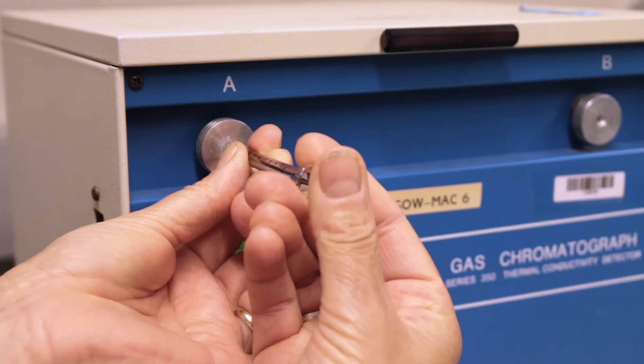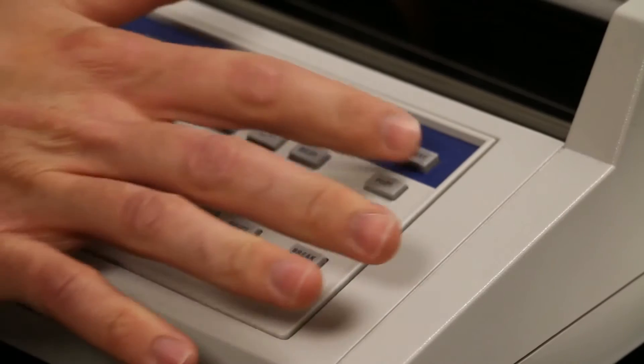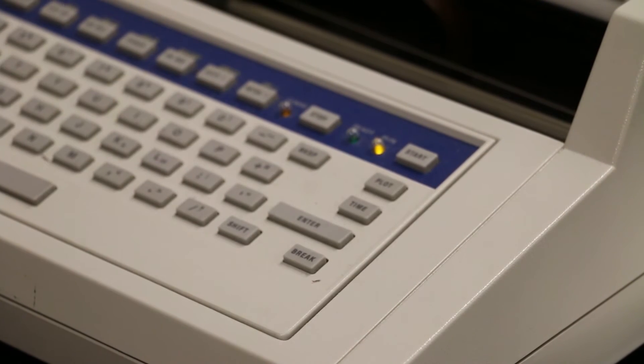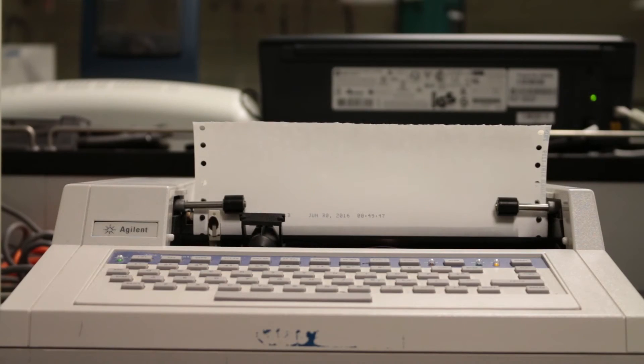When your sample has been injected, smoothly remove the syringe from the injection port. Then press start at the upper right of the integrator attached to the GC. After you see the integrator starting, you can use the time it will take to process your sample to clean the syringe for the next user.